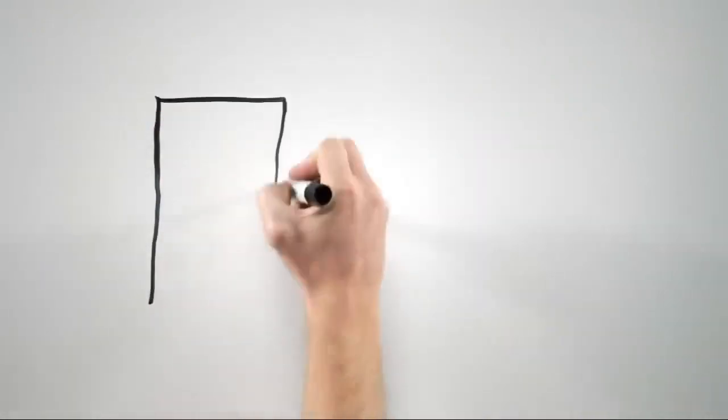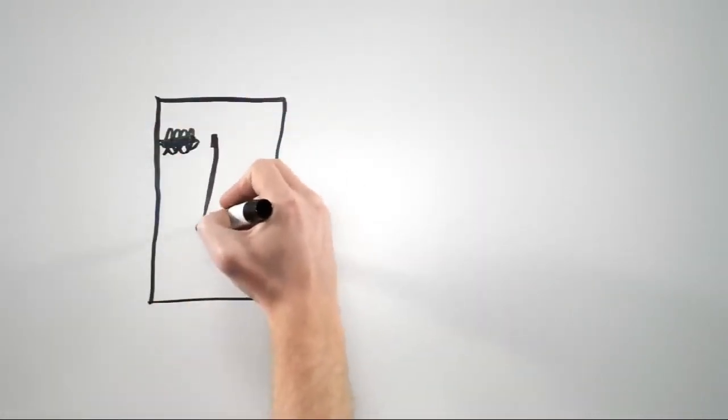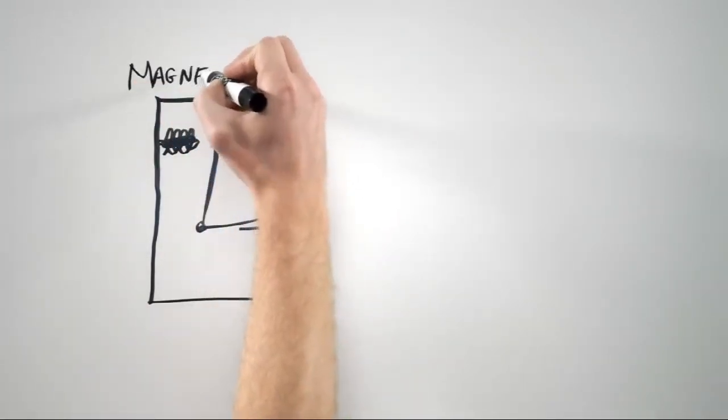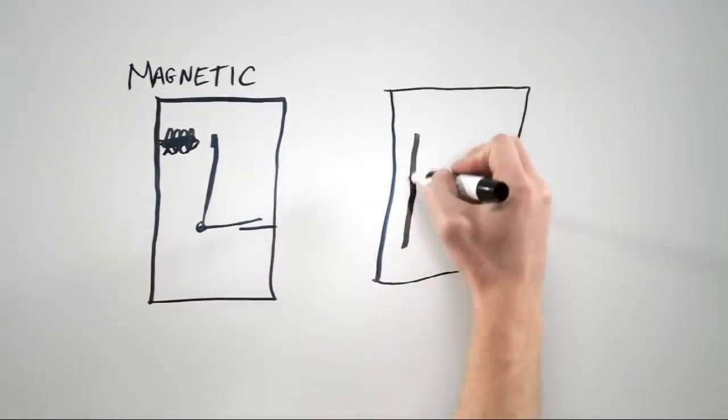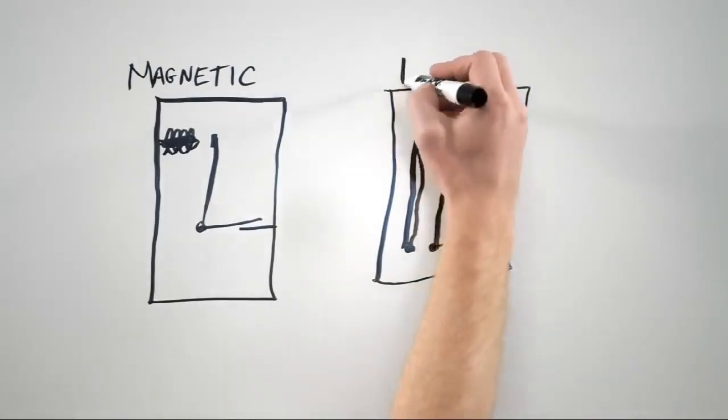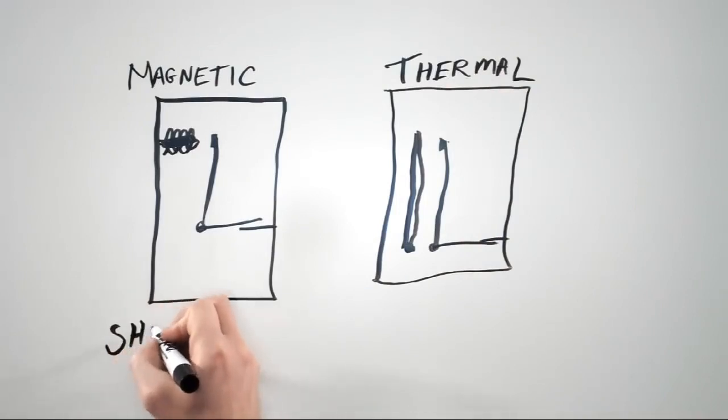Going back to the circuit breaker, we've got magnetic protection built in and thermal protection built in. Magnetic protection reacts to a very high level of current very quickly, so it is suited to protect against short circuits. Thermal protection is a slower reacting protection and correlates to the amp rating you see on the front of the circuit breaker. This is to prevent against over current.